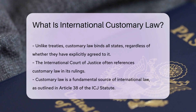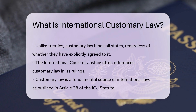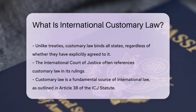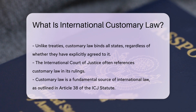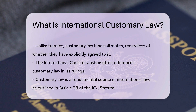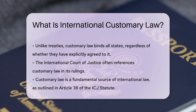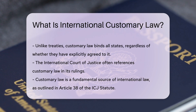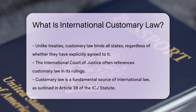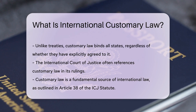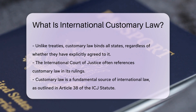The International Court of Justice often references customary law in its rulings. Customary law is a fundamental source of international law, as outlined in Article 38 of the ICJ statute. It plays a crucial role in filling gaps where treaties do not exist.